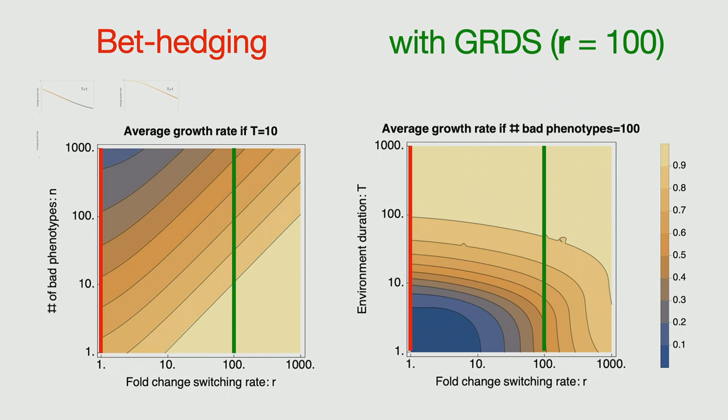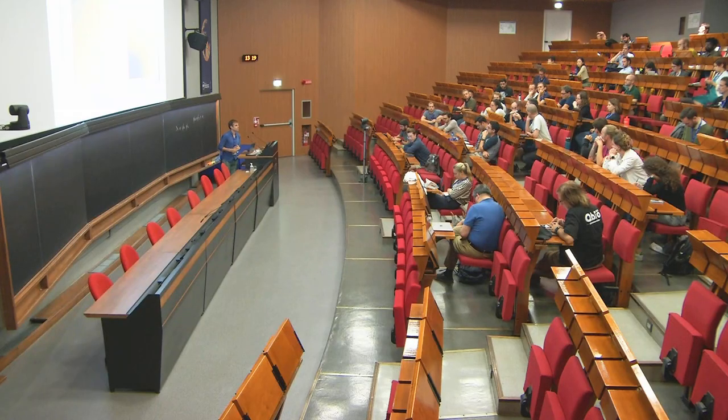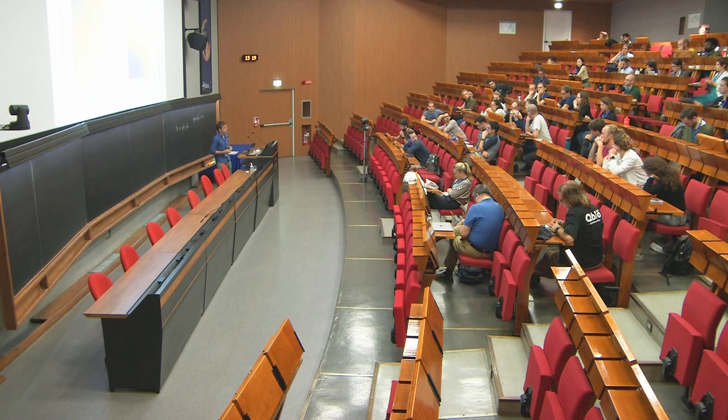Actually a comment on the last one. I think probably the cells can sense much faster that they're in a slow growth rate than we can see that. Like we take, it takes much longer to see that the growth rate is low, but I guess they sense it much faster than us, right? Somehow. Because.